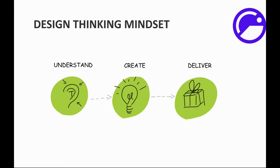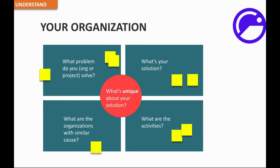These are the three steps we'll go through. First, we want to understand your organization — four areas to brainstorm so you can come up with what is unique about your solution. The first area is: what problem does your organization or project solve? The second is: what is your solution to that problem? Usually this is done in a workshop with a whiteboard or sticky notes.